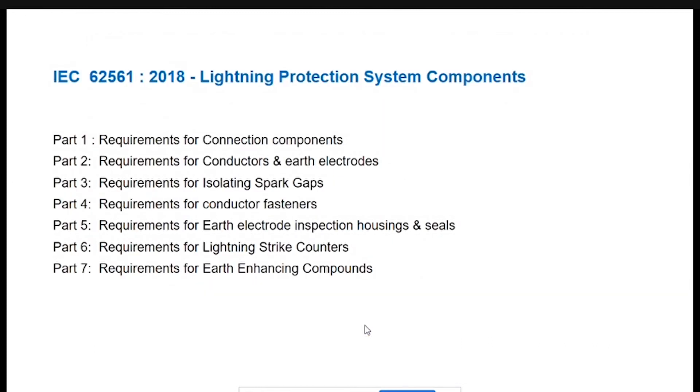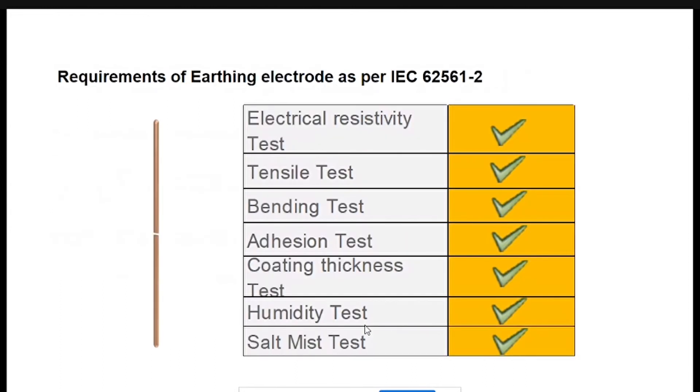When you use the earthing electrode, there are minimum dimensions and configurations recommended. It has to adhere to the requirement of IEC 62561 Part 2 for the earth electrode and IEC 62561 Part 7 for earth enhancement compound.